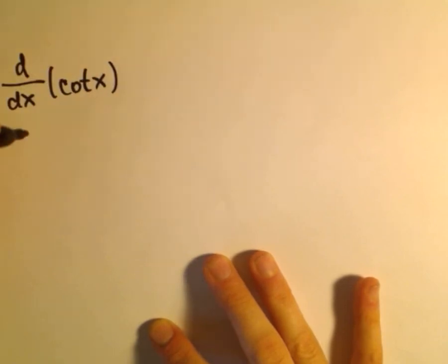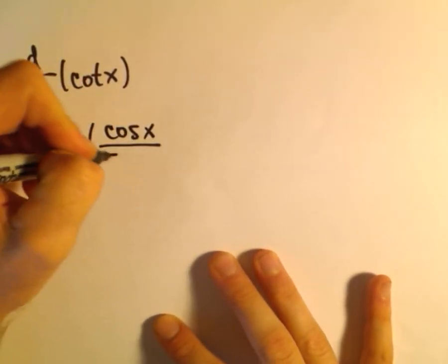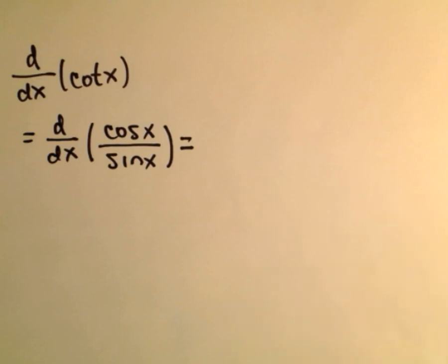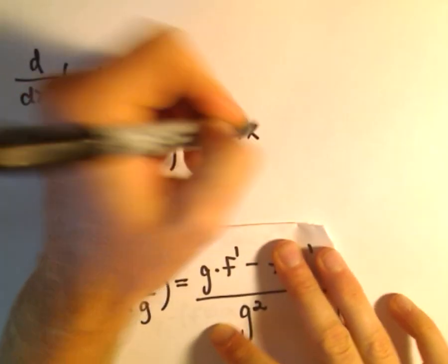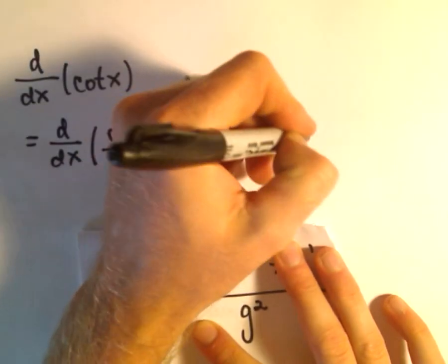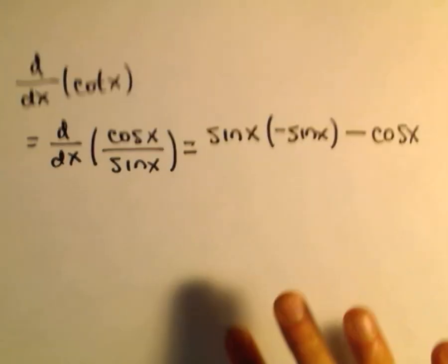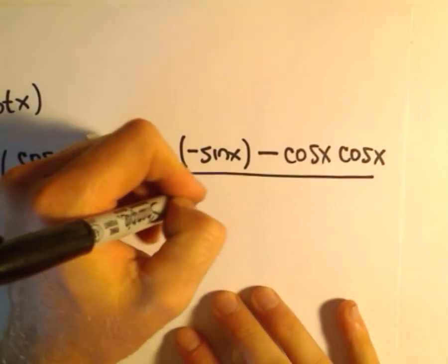Let's go through the other ones a little more quickly. For cotangent: tangent is sine over cosine, so cotangent is cosine over sine. We'll use the quotient rule. It says we get whatever's in the denominator, sine x, times the derivative of the numerator — the derivative of cosine is negative sine x — minus the numerator cosine x times the derivative of the denominator, so the derivative of sine gives us another cosine. That's all over the denominator squared, sine x squared.